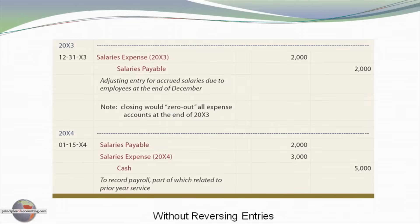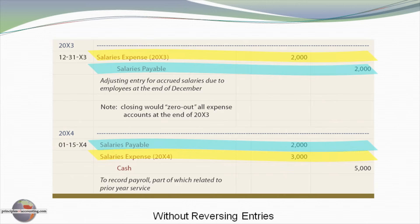If we look at the journal entries for this transaction without reversing entries, we'll have the initial recording of salary expense and a related salary payable at the end of the first year — a standard adjusting entry. Then on January 15th, when we record the salary payment, we'll record $3,000 of expense, and the other $2,000 goes to pay the payable that was previously accrued. The total $5,000 payment becomes $3,000 of expense and $2,000 to satisfy the previously recorded salary payable.